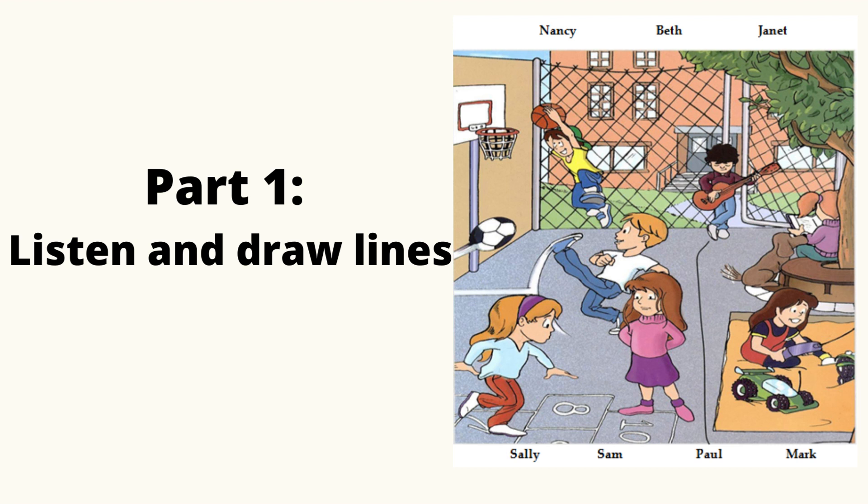2. Where's Janet? Can you see her? Yes. She's wearing red trousers. Is she playing basketball? No. She's hopping. It's a great game.